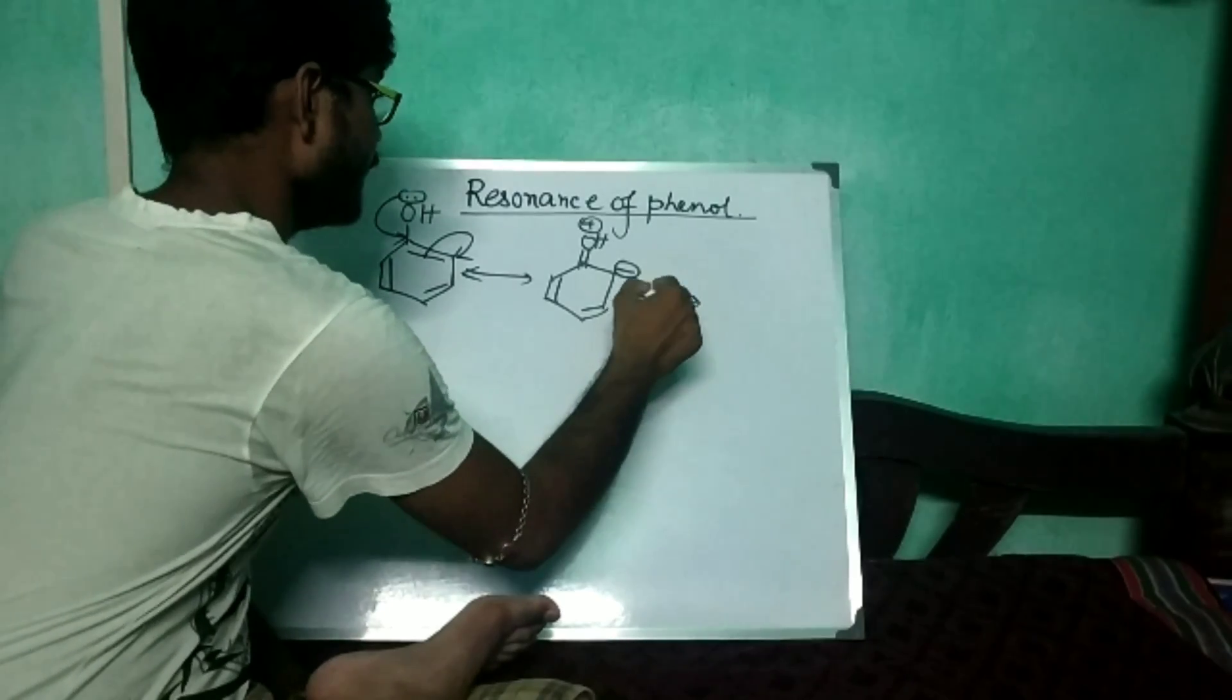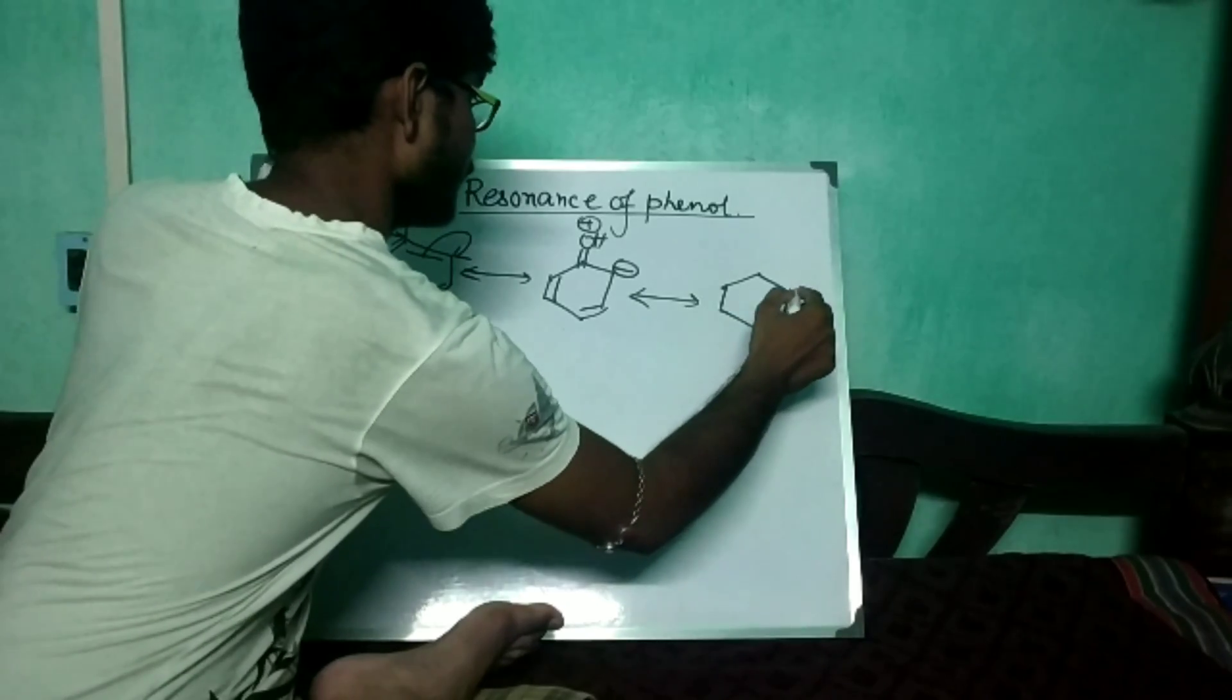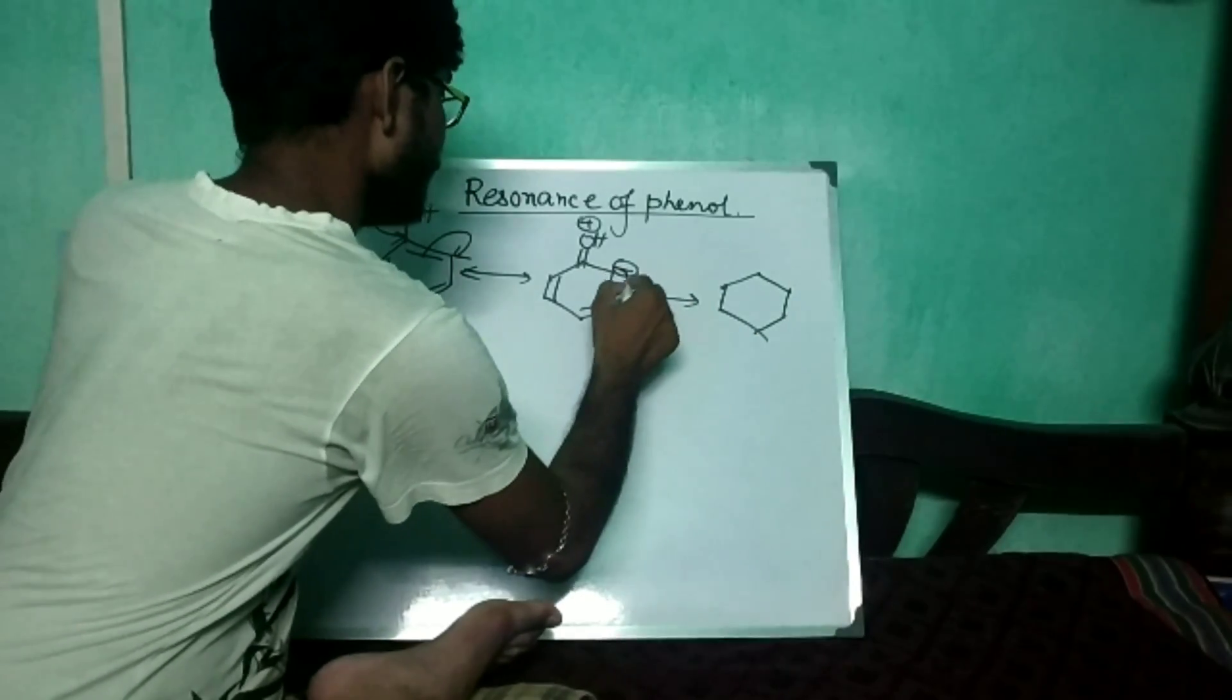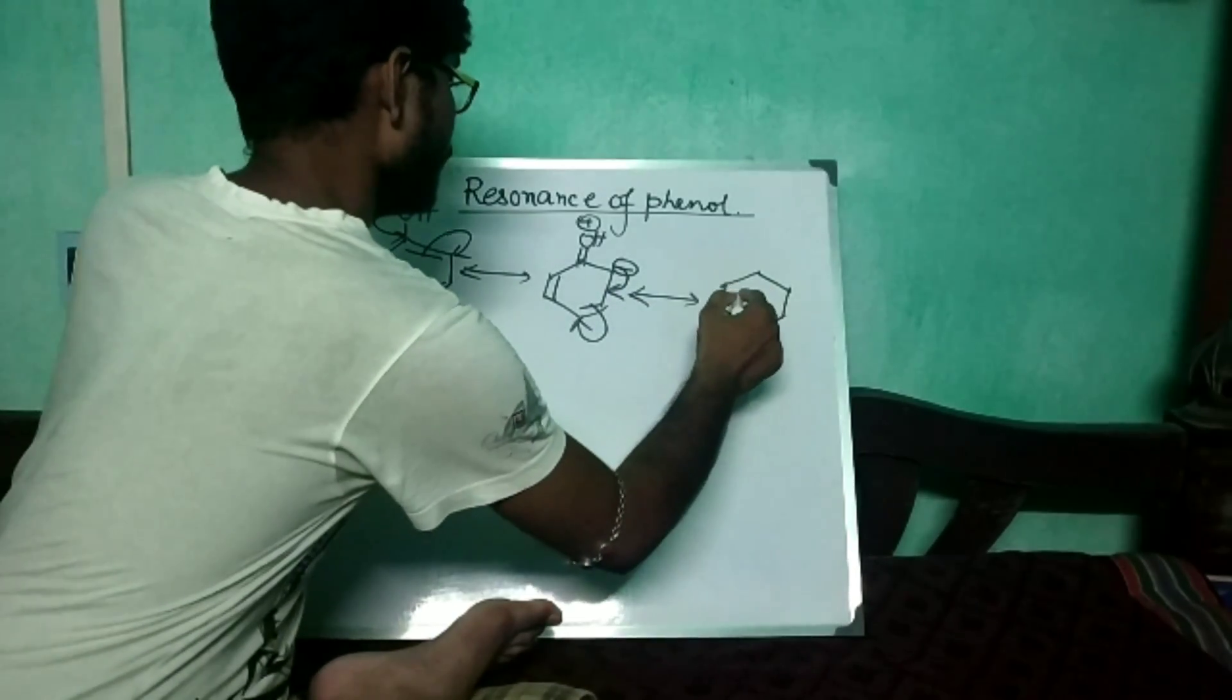And in the next step again, this negative charge will make a bond in this position and this one will be on this carbon.